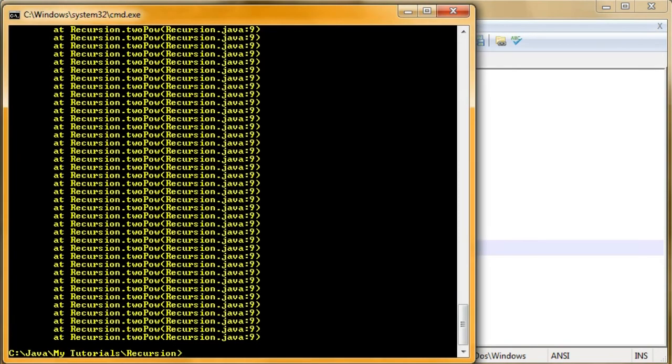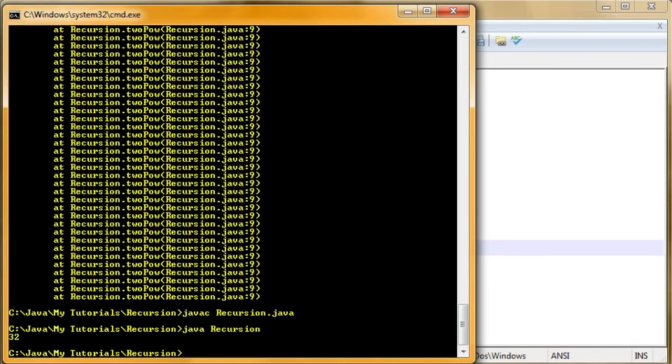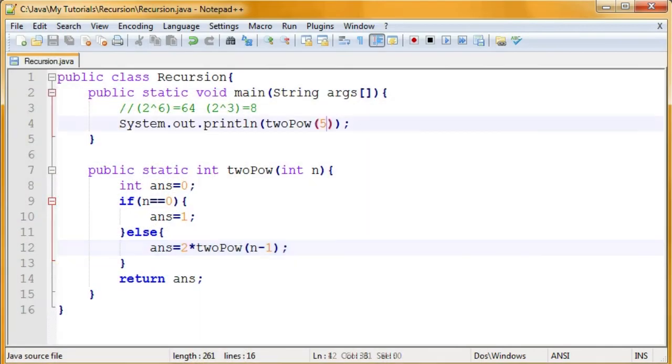Now, open this again. And go ahead and compile it again. You have to see recursion.java. Okay? Java recursion. And give me 32, which is right, because 2 to the power of 5 is 32.